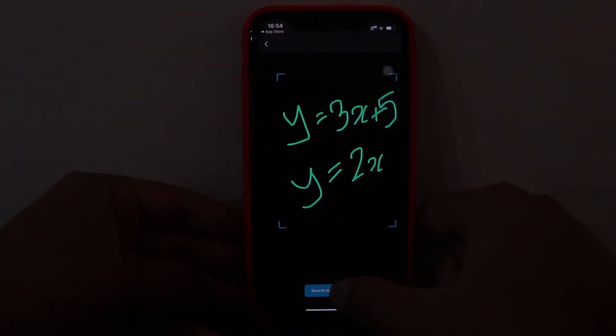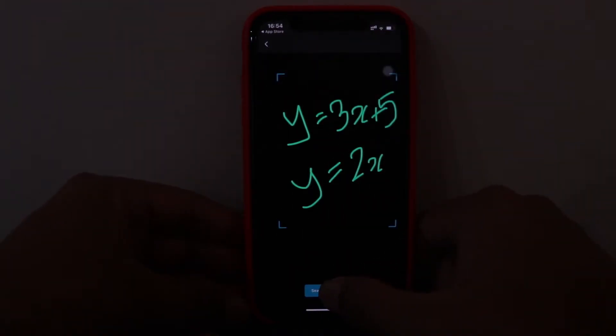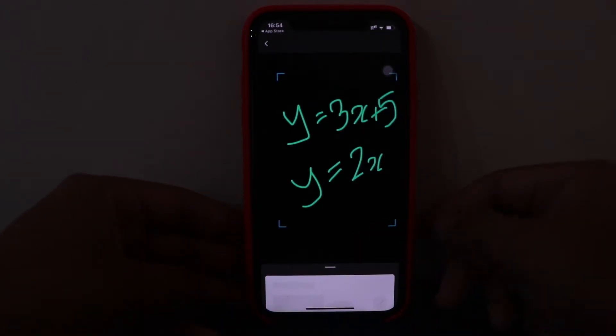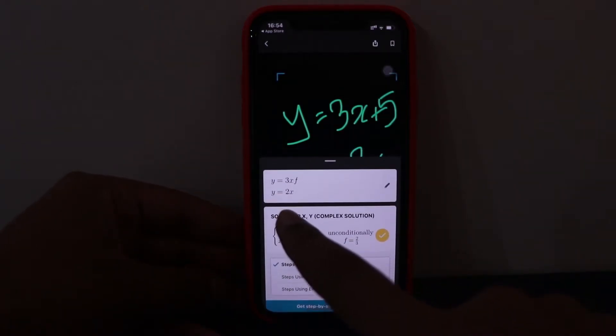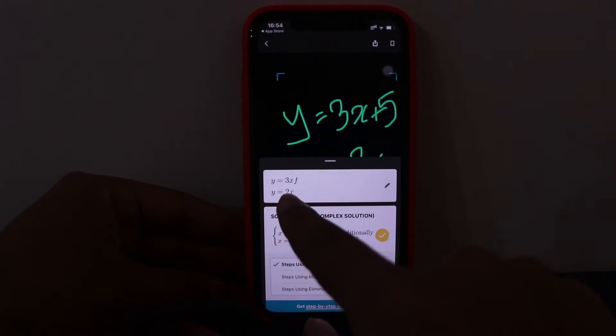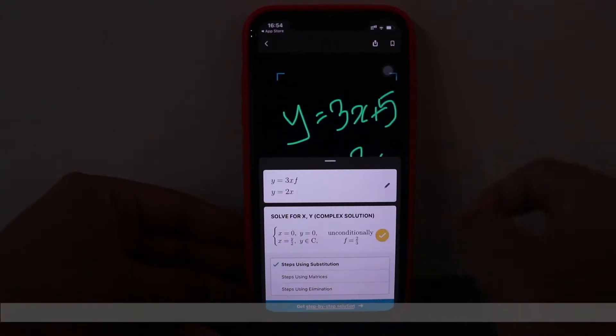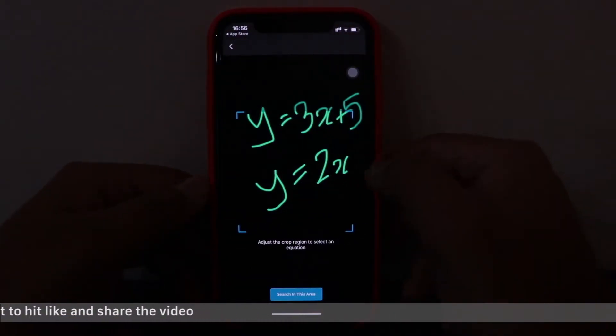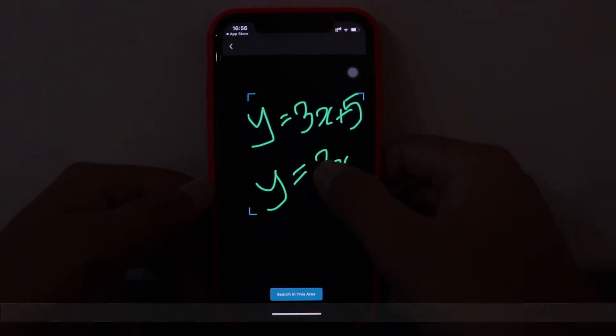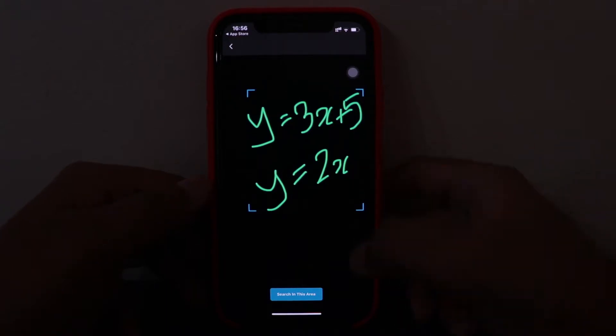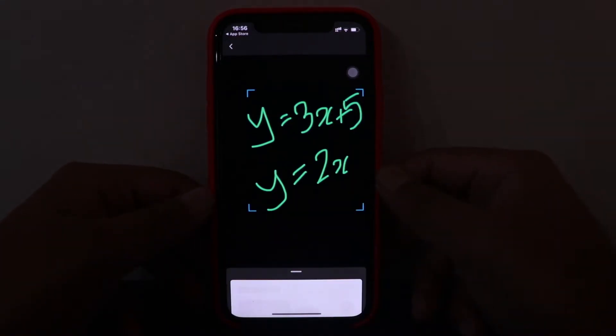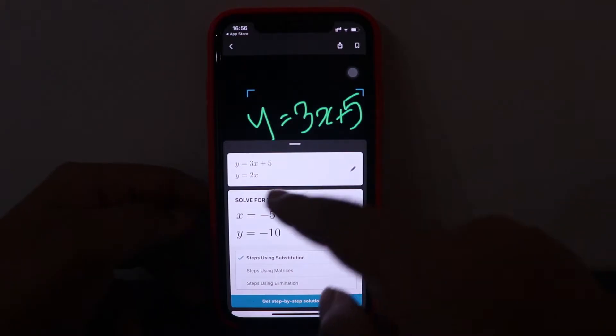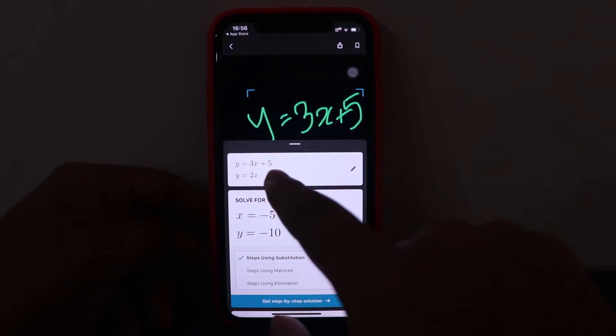Here you go, just click on search the area. So no, it has detected some wrong equation so let's just try again. Let's just select the image and let me just select the area. So you need to select the area properly so that it can detect the equation.